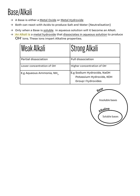Therefore, please take note that an alkali can only be a soluble metal hydroxide that can dissociate in aqueous solution to produce hydroxide ions that impart alkaline properties. Unfortunately, bases that cannot dissolve in aqueous solutions will not have alkaline properties due to the lack of these hydroxide ions.